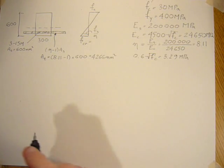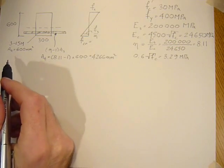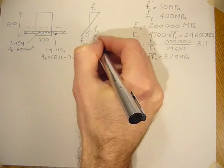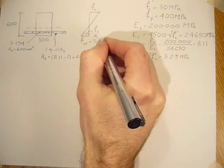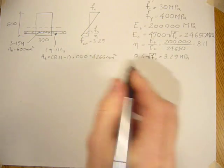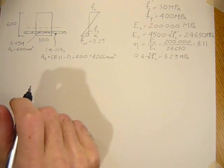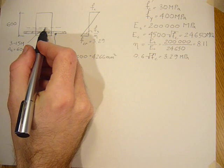So we can start the program now. We can find out the cracking moment. The cracking stress is 3.29 MPa. We can find the cracking moment by first getting the neutral axis.